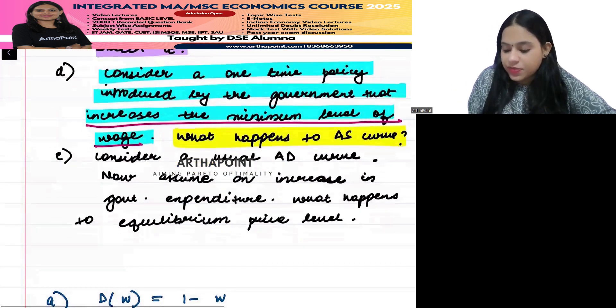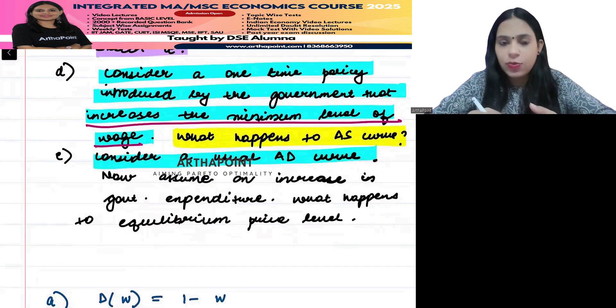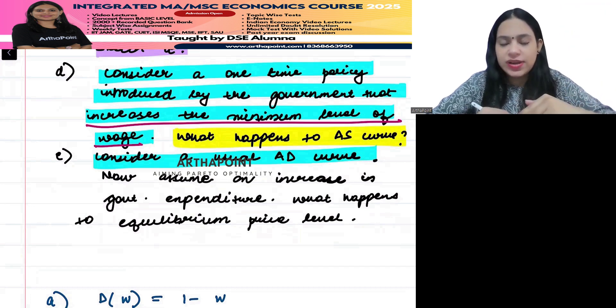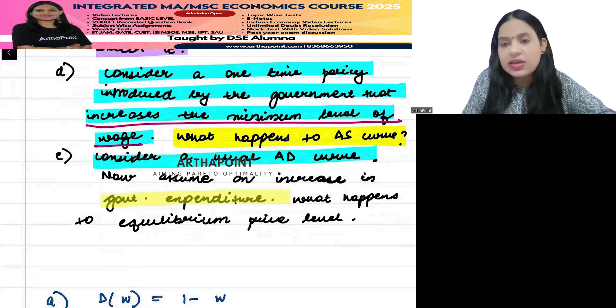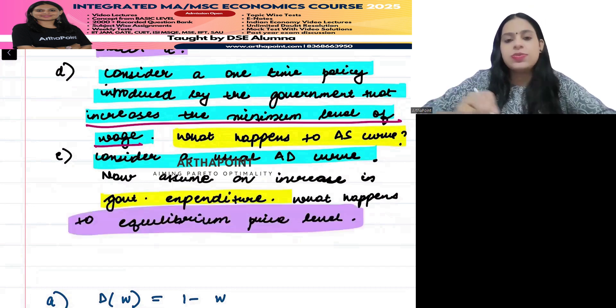Next part: now consider a usual aggregate demand curve. You have to work with entire equilibrium. You have derived the AS curve. You have to use a usual AD curve and assume that there is increase in government expenditure. Now you need to tell how the equilibrium level of price will change.